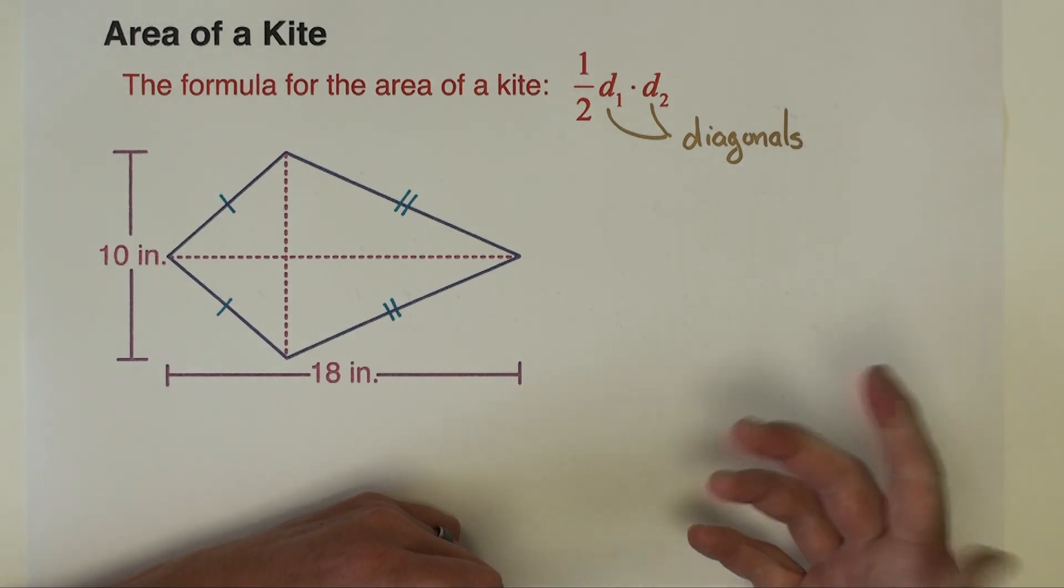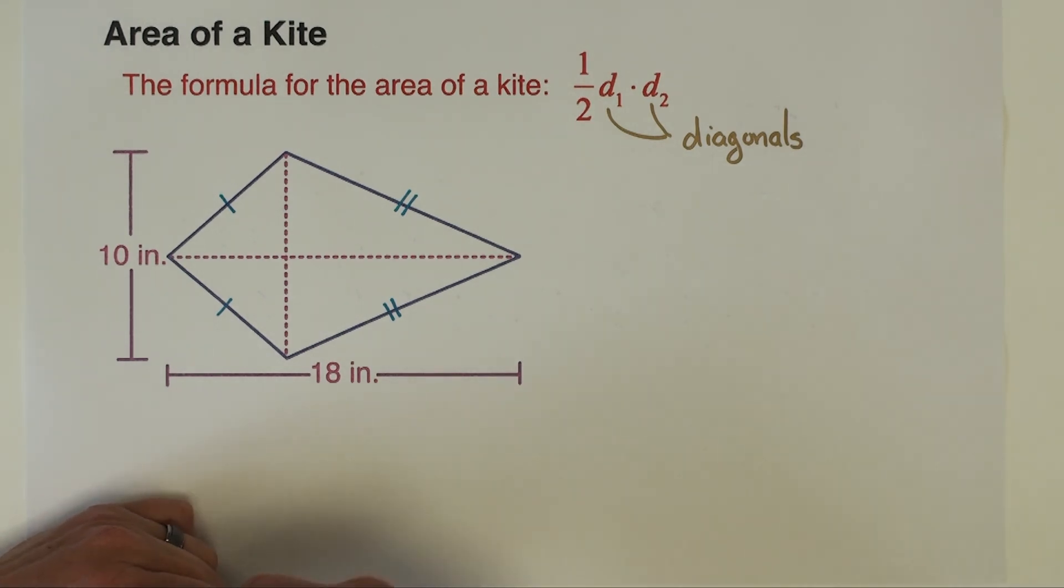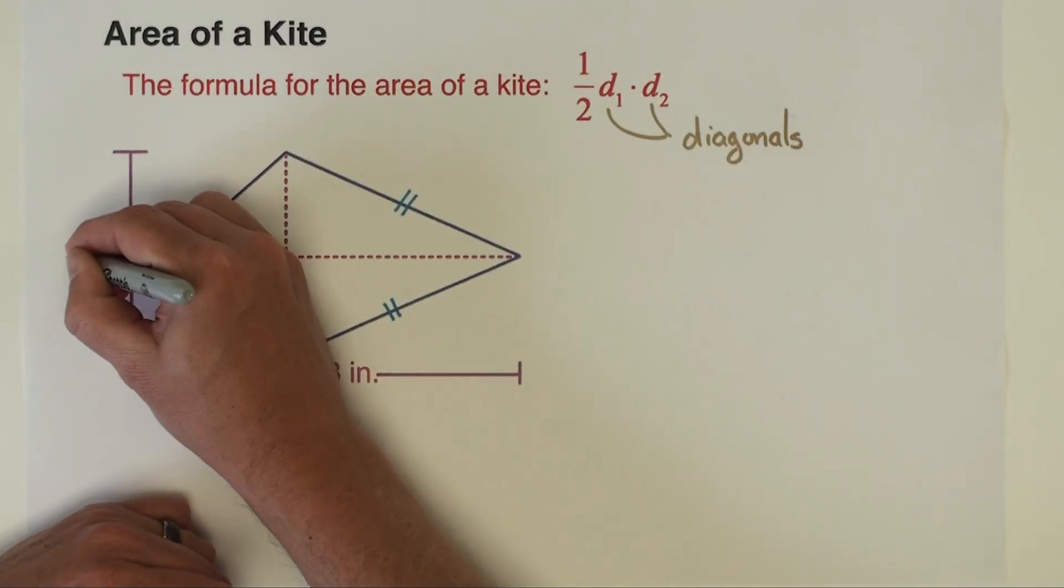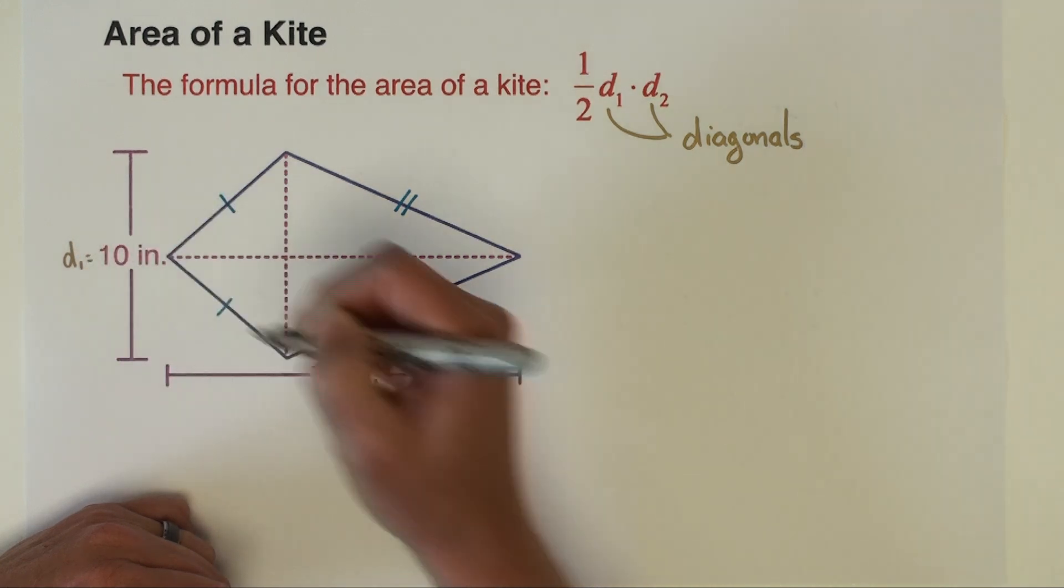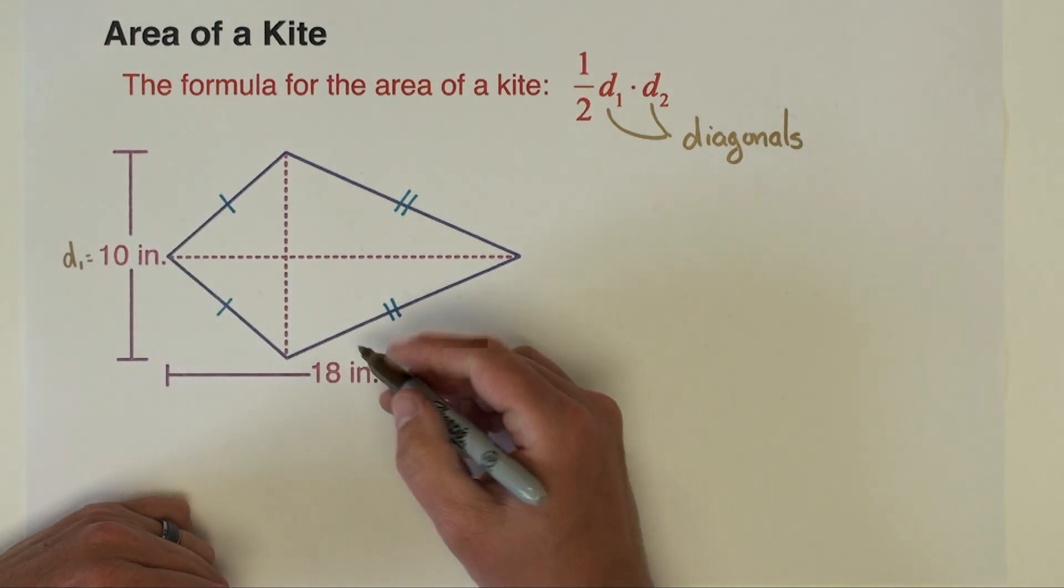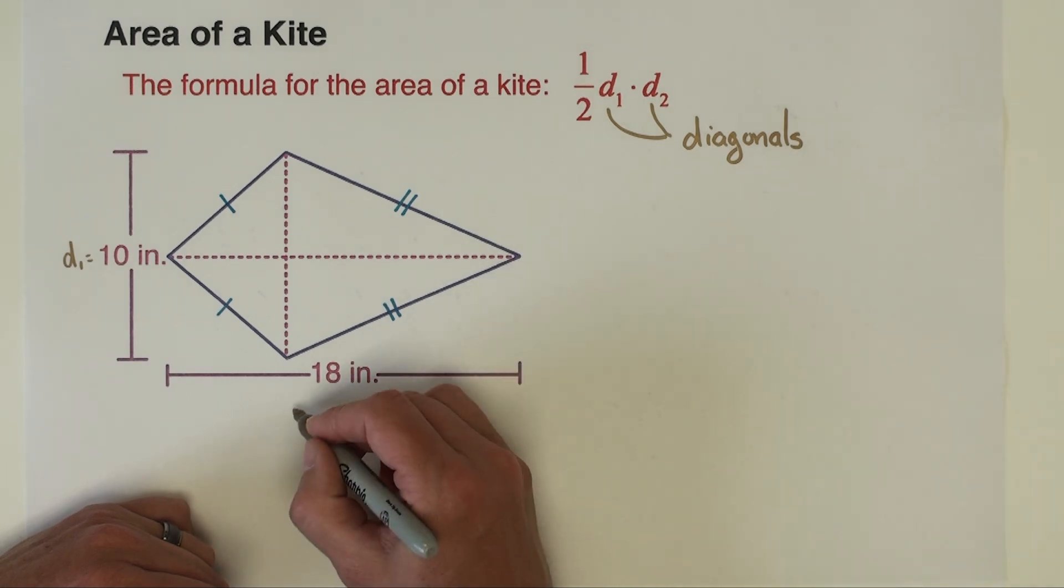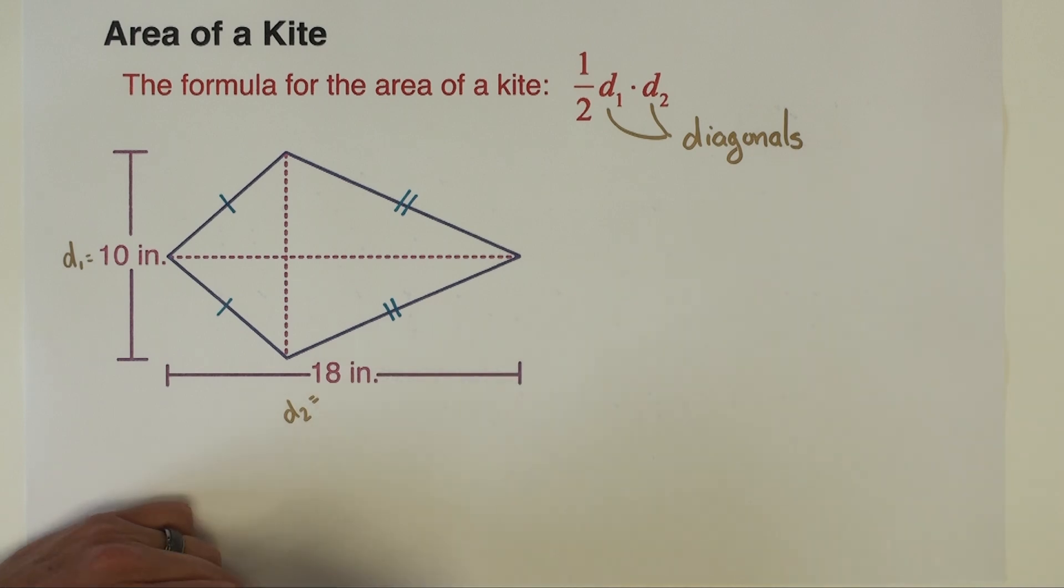So in this case, those lengths are given to you. The length of this diagonal right here is given on the outside of the figure as 10, so that could be our d₁. And the length of the other diagonal going horizontally across the inside is given to us on the bottom as 18, that could be our d₂.